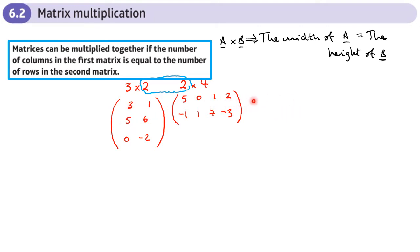The answer matrix will be 3 high and 4 across — these outer numbers give you the dimensions of the result matrix, as long as the inner numbers match. You go across the first matrix and down the second, so for every element going across there must be a corresponding one going down. If you swapped the order and put the 2-by-4 first, it wouldn't work — you'd be going 4 across but only have 3 going down.